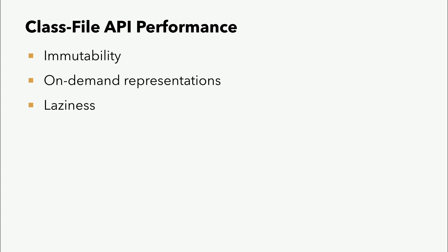Dadurch muss man zwar immer noch sehr viel parsen, es muss ja schon das Classfile verstanden werden, aber auf jeden Fall muss weniger geparst werden. Als nächstes benutzen sie Bulk-Copying für viele Elemente. Wenn ein Element sich nicht ändert, wie der Constant-Pool oder Stack-Maps, werden die einfach hart rüber kopiert. ASM muss sie jedes Mal neu bauen. Und vielleicht ist jemanden aufgefallen vorhin, als wir auf den Namen der Methode zum Beispiel geschaut haben, dass da nicht direkt ein String war. Sie haben einen eigenen Typ, einen UTF8Entry. Das ist eher nur eine Referenz, wo der String wäre im Classfile, sodass kein String erzeugt werden muss, wenn man den String nicht haben will. Da sind schon sehr interessante Optimierungen dahinter, um in dem Fall die Performance zu erreichen, die notwendig ist, um das auch in sowas wie dem JDK einzusetzen.